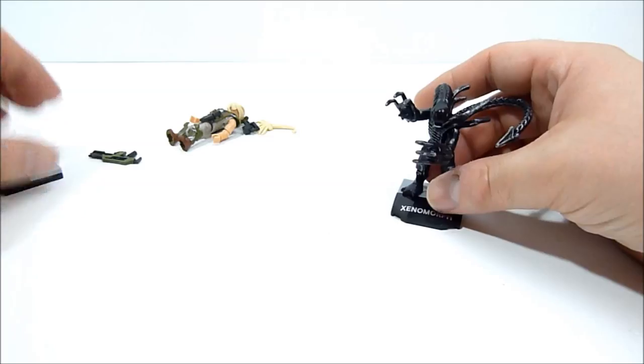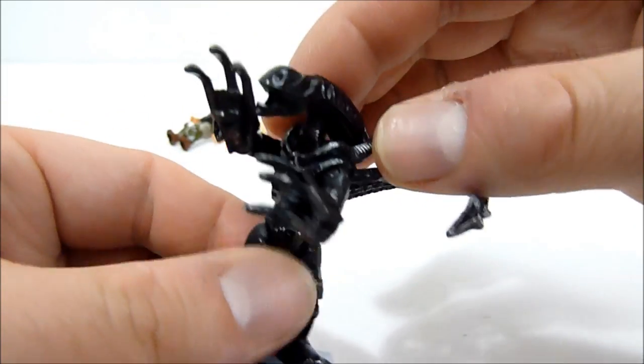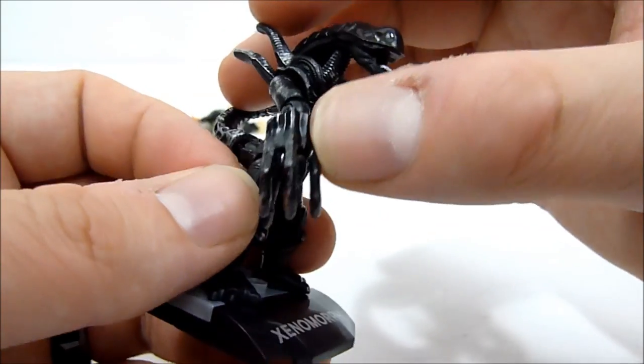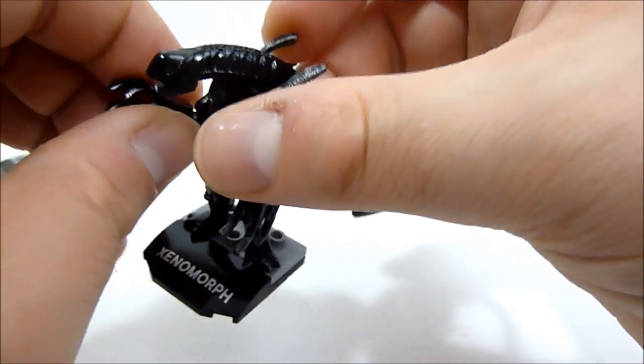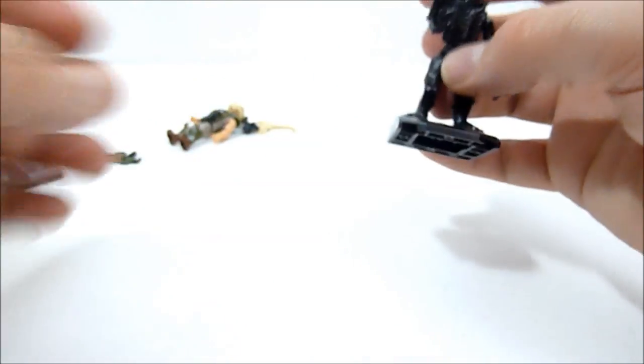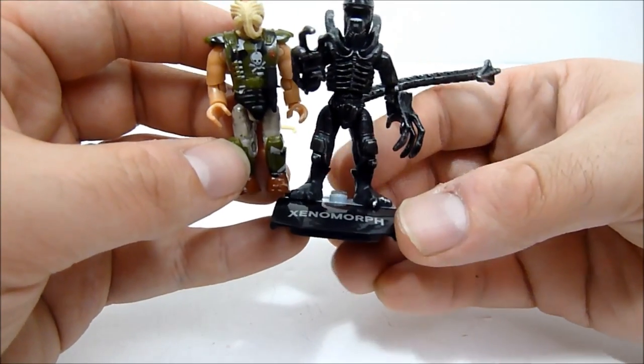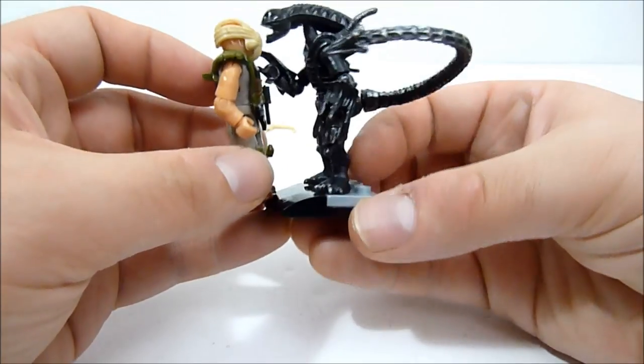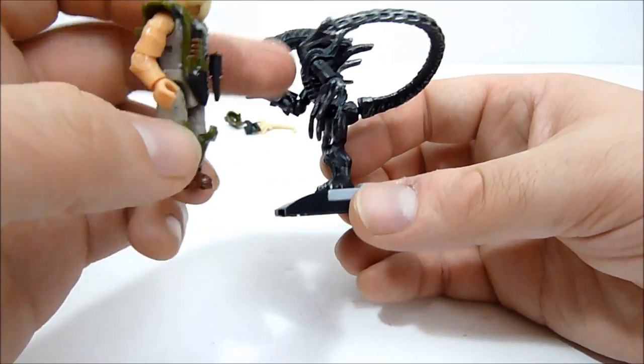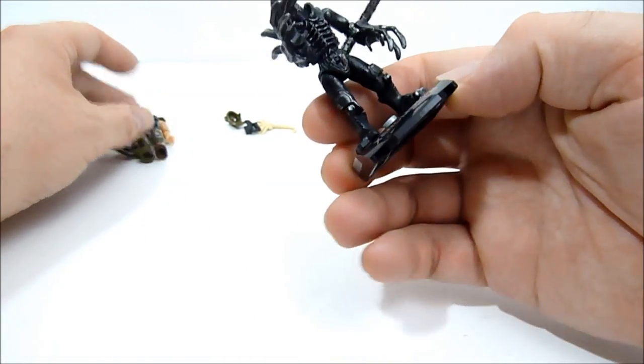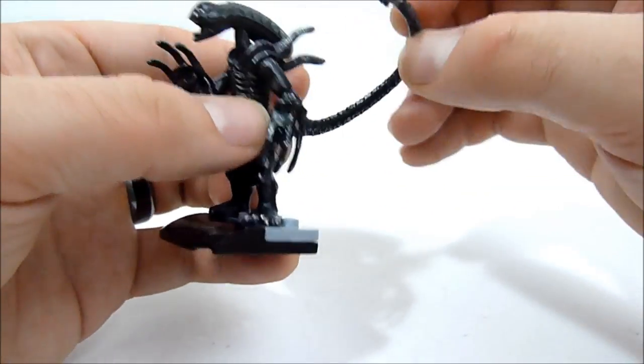Those two facehuggers come with the xenomorph, so let's talk about this xenomorph, the alien, the titular alien from the Alien franchise. He's really cool. There are some things I'd like better if they had done different things. You can see his height is about the same as the marine, but he just seems a lot larger because he's got that long neck, his body is quite a bit more bulky.